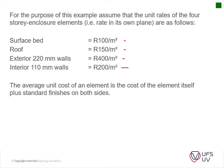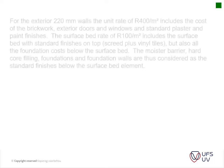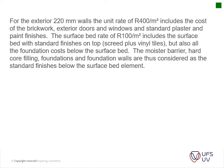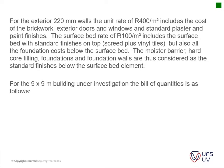The average unit rate of an element is the cost of the element itself plus the standard finishes on both sides, meaning finishes are included in the rates above. For the exterior 220-millimeter walls, the 400 rand per square meter rate includes brickwork, exterior doors and windows, and standard paint finishes. The surface bed rate of 100 rand per square meter includes surface finishes such as screed and vinyl tiles, as well as all foundation costs below — moisture barrier, hardcore filling, foundations, and foundation walls — considered as standard finishes below the surface bed element.